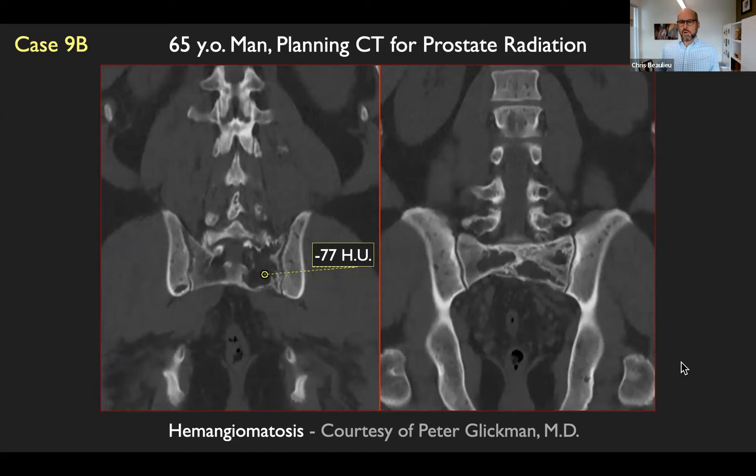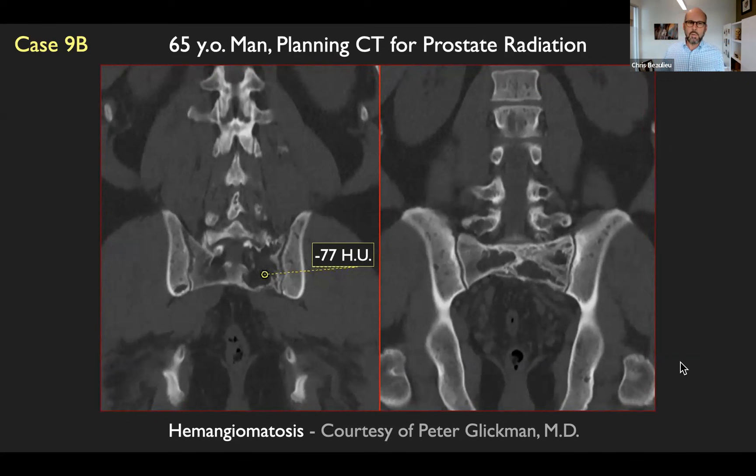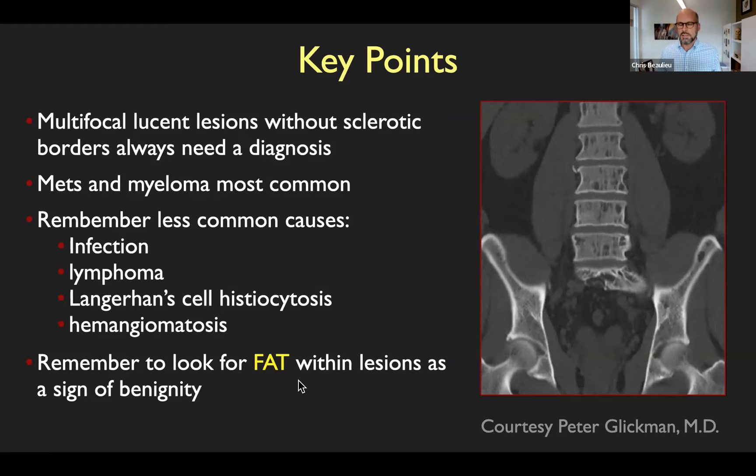Bottom line for multifocal lucent lesions without sclerotic borders: you really need to come to some diagnosis. Metastases and myeloma are the main suspects, but you can have infection or Langerhans cell histiocytosis, and rarely hemangiomatosis. Always remember to look for fat, because if you see fat within a lesion that's very helpful.